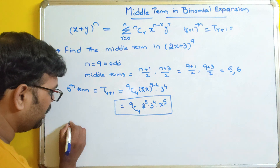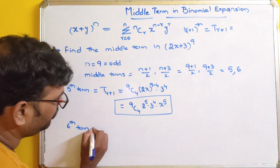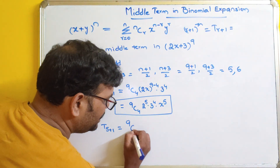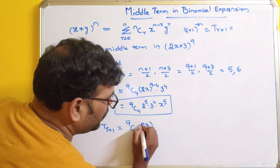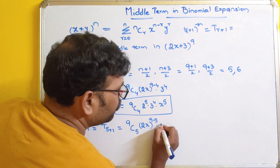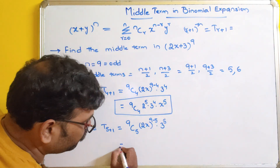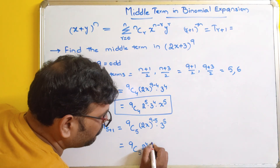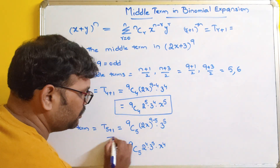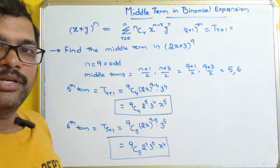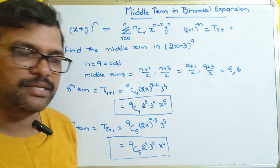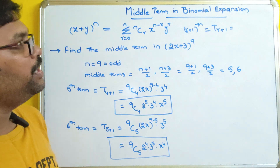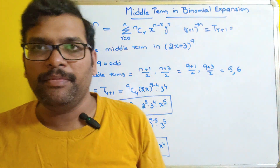The sixth term, the second middle term, has r = 5: T6 = 9C5 · (2x)^(9−5) · 3^5 = 9C5 · 2^4 · 3^5 · x^4. So we get an x^5 term and an x^4 term as the two middle terms of (2x + 3)^9. This is the method to find the middle term in any binomial expansion.